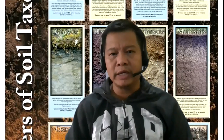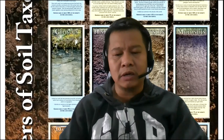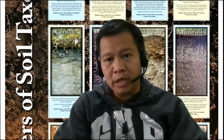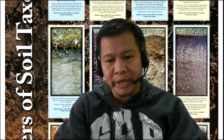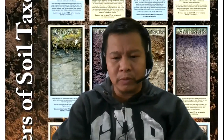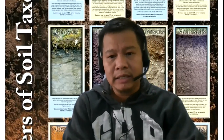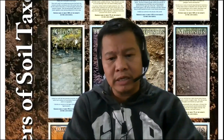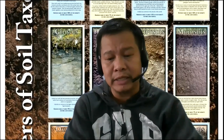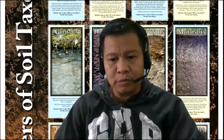Hello, once again. Let us continue with our discussion on soil survey and classification. In previous topics, we have been discussing the different features of diagnostic horizons. We made mention about the surface horizons, which includes the mollic, umbric, and histic. We also discussed the diagnostic subsurface horizons observable in the B horizon, and some in the C horizons, including the cambic, argillic, natric, spodic, and oxic.